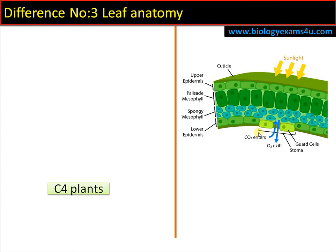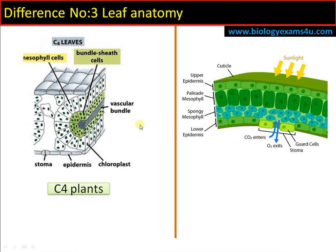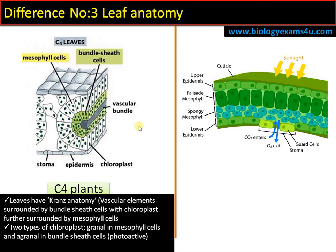Difference number three: leaf anatomy. In C4 plants there is a special type of anatomy called Kranz anatomy. The vascular bundle is surrounded by bundle sheath cells with chloroplasts, which are further surrounded by mesophyll cells with chloroplasts. Since bundle sheath cells are the site of the dark reaction or Calvin cycle, their chloroplasts have grana that are poorly developed. Mesophyll cells have well-developed grana as they are the site of the light reaction. So there is dimorphic chloroplast, and stomata are photoactive — high light intensity induces closure of stomata.